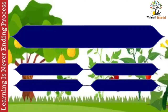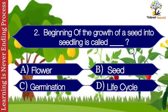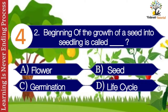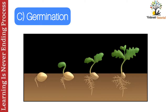Question number two: the beginning of the growth of a seed into a seedling is called dash. Options: A. Flower, B. Seed, C. Germination, D. Life cycle. The correct answer is C. Germination. The beginning of the growth of a seed into a seedling is called germination.